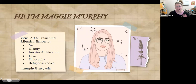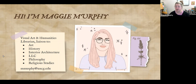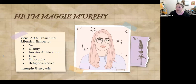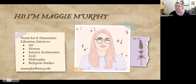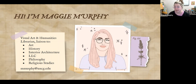Hello, I'm Maggie Murphy. I use she/her pronouns. I am the visual art and humanities librarian. My liaison areas are art history, interior architecture, languages, literatures and cultures, philosophy, religious studies, and my email address is mmurphy@uncg.edu. I'm also always happy to work with folks doing research related to humanities information and data, sometimes from social sciences, including when they have a history-of-X question related to their original empirical research.